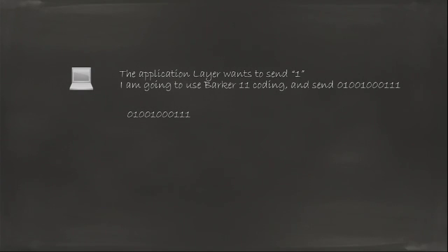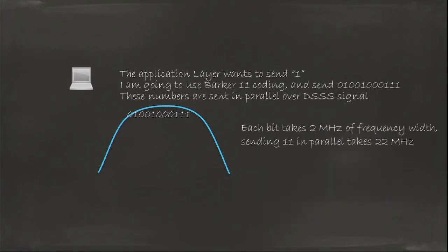So you take that sequence, that long value now of 11 bits, and you're going to send those numbers in parallel over this spread spectrum signal like this. That's why you were seeing the wave in the previous slide showing these numbers being sent in parallel. To get into the nitty-gritty details, each bit takes 2 MHz of frequency to be sent. So if you need to send 11 in parallel, you need to have 22 MHz wide frequency for your transmission. So that's the size of the DSSS basic transmission in Wi-Fi.